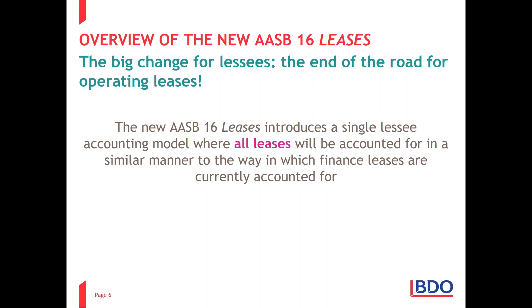Lessors will still have different accounting treatment for finance leases and operating leases. However, if you're a lessee, each and every lease will be accounted for in exactly the same way — how we currently account for finance leases. On day one, we debit a right-of-use asset and credit a liability for all the lease payments over the period of the lease. After that, the asset is depreciated over the lease period, the liability repaid through lease payments, split between an interest component and a capital repayment component.